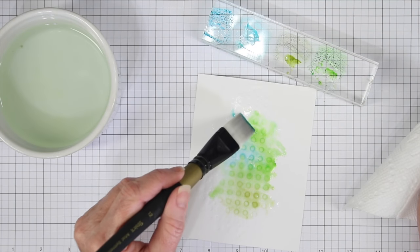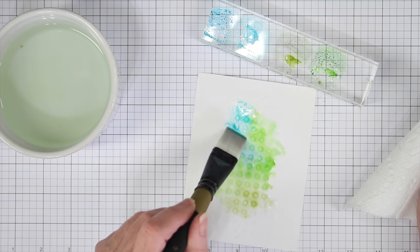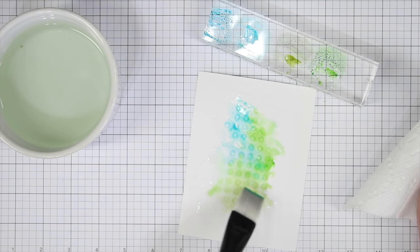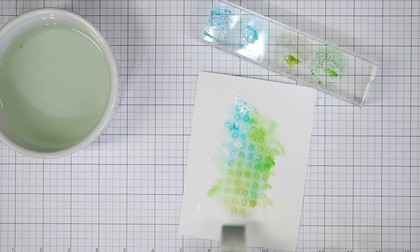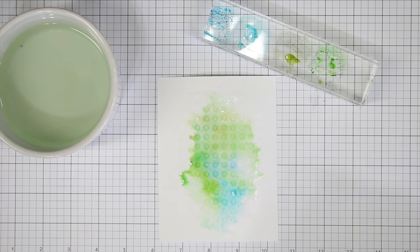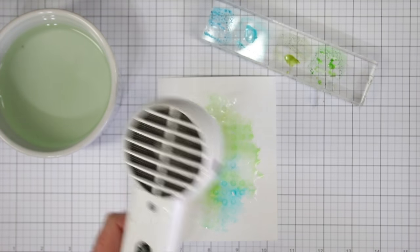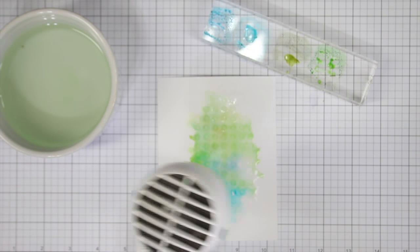My final color is Peacock Feathers, and I'll just go ahead and tap this in. I'll go back over into the green just to blend these colors together. And once you have all your color laid down, you can either let that air dry or dry it with a heat tool.